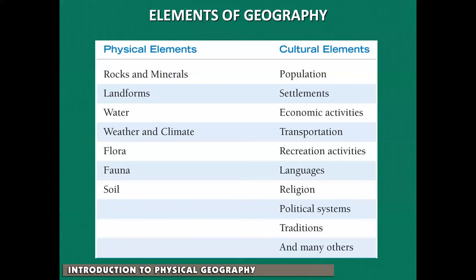Any physical geography course is meant to give you a bird's eye view of the discipline. Physical elements versus cultural elements — a lot of this is really intertwined. Climate and weather affect population, economic activities, and political systems. Language and religion are more human and political systems, but they can still be affected by the physical world as well.